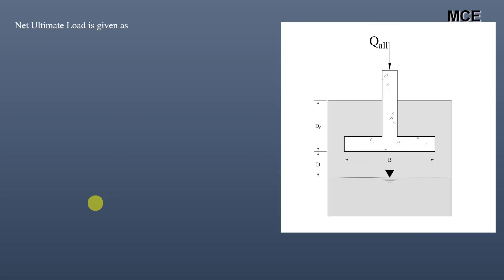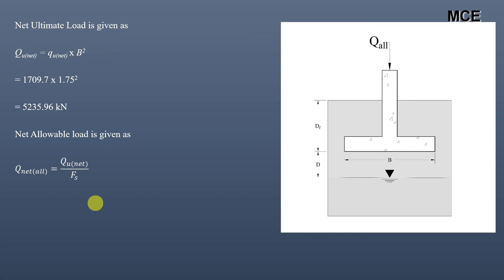Similarly, the net ultimate load equals the net ultimate bearing capacity multiplied by the cross-sectional area: 1709.7 × 1.75² = 5235.96 kN. The net allowable load equals the net ultimate load divided by the factor of safety: 5235.96 ÷ 3.5 = 1496 kN. This is how you find the net and gross allowable loads for a square footing.